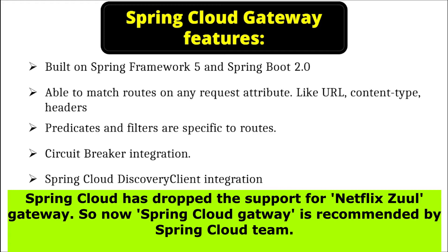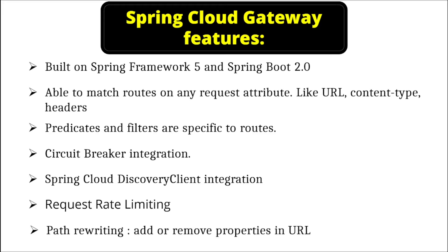Let's see the features of Spring Cloud Gateway. It is built on Spring Framework 5 and Spring Boot 2.0. It is able to match routes on any request attribute like URL, content type, and headers. Predicates and filters are specific to a route, so we can write a predicate and filter for each different route.